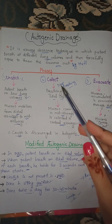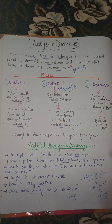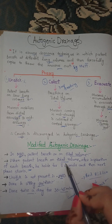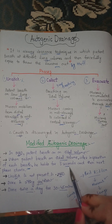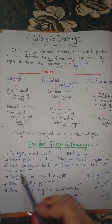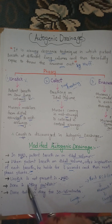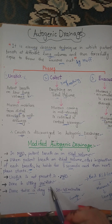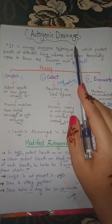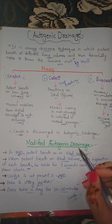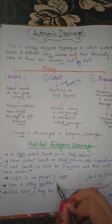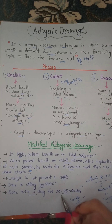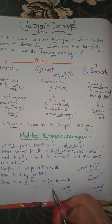In modified autogenic drainage, the patient breathes at tidal volume because it starts from the collect phase. After inspiration of each breath, the patient holds for three seconds before moving to the next phase. Both autogenic drainage and modified autogenic drainage are performed in the sitting position and are done twice a day for about 30 to 45 minutes.